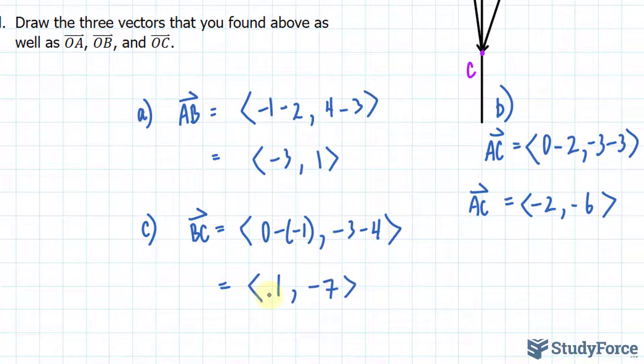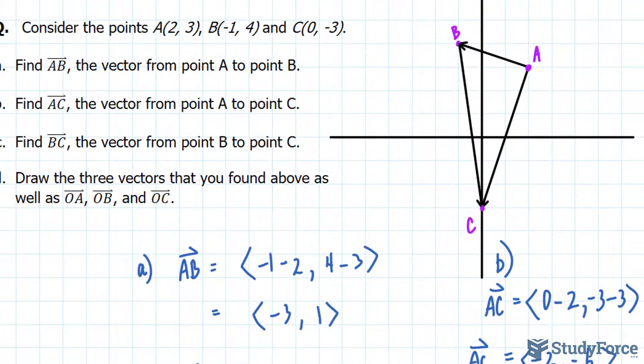Now, the nice thing about doing this is that if you wanted to center your vectors at the origin, you can do so by plotting where these points are. For instance, if I plotted (-3, 1), that would be over here. That would represent one of my vectors. And it would mean the exact same thing as if it were up here.